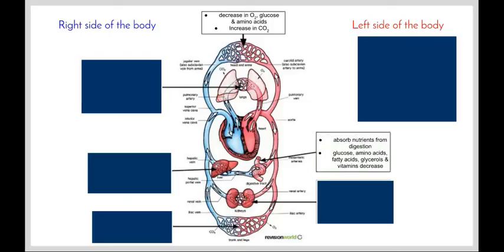In the digestive tract, we have the absorption of nutrients as a result of the nutrients being created during digestion. As we leave the digestive tract, the amount of the nutrients will decrease. In particular, glucose, amino acids, fatty acids, glycerols and vitamins will decrease as the blood leaves the digestive system as opposed to the blood entering the digestive system.